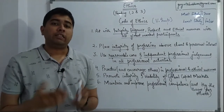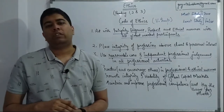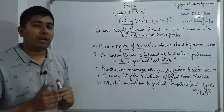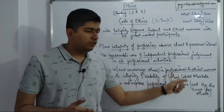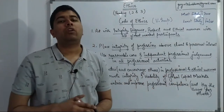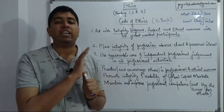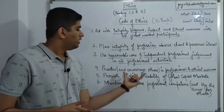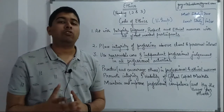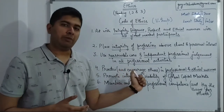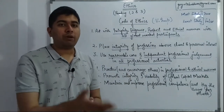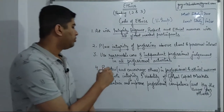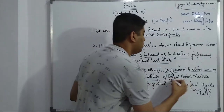Code of Ethics number four: practice in a professional and ethical manner, and encourage other members and candidates to do the same. As a participant in the capital markets, you must conduct your work following all ethical guidelines set by the institute or any other applicable regulatory authority, and you should also encourage other professionals to do the same.